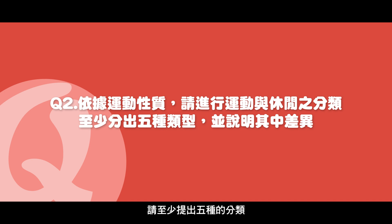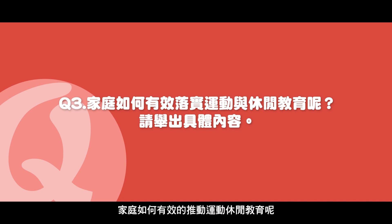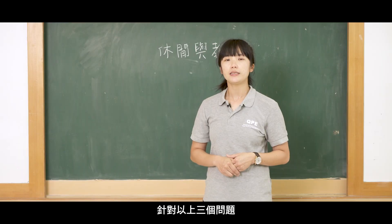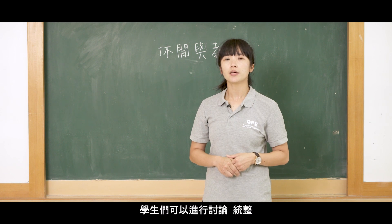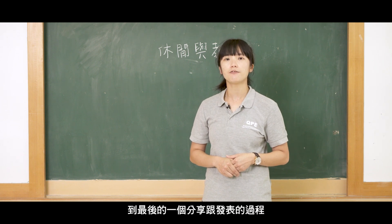如何更能達到運動休閒的一個分類效果，請至少提出五種分類。第三，我們都知道家庭對於運動休閒教育扮演了很重要的角色，家庭如何有效的推動運動休閒教育呢？針對以上三個問題，學生們可以進行討論、彙整，並且做出學習歷程，到最後的一個分享跟發表的過程。